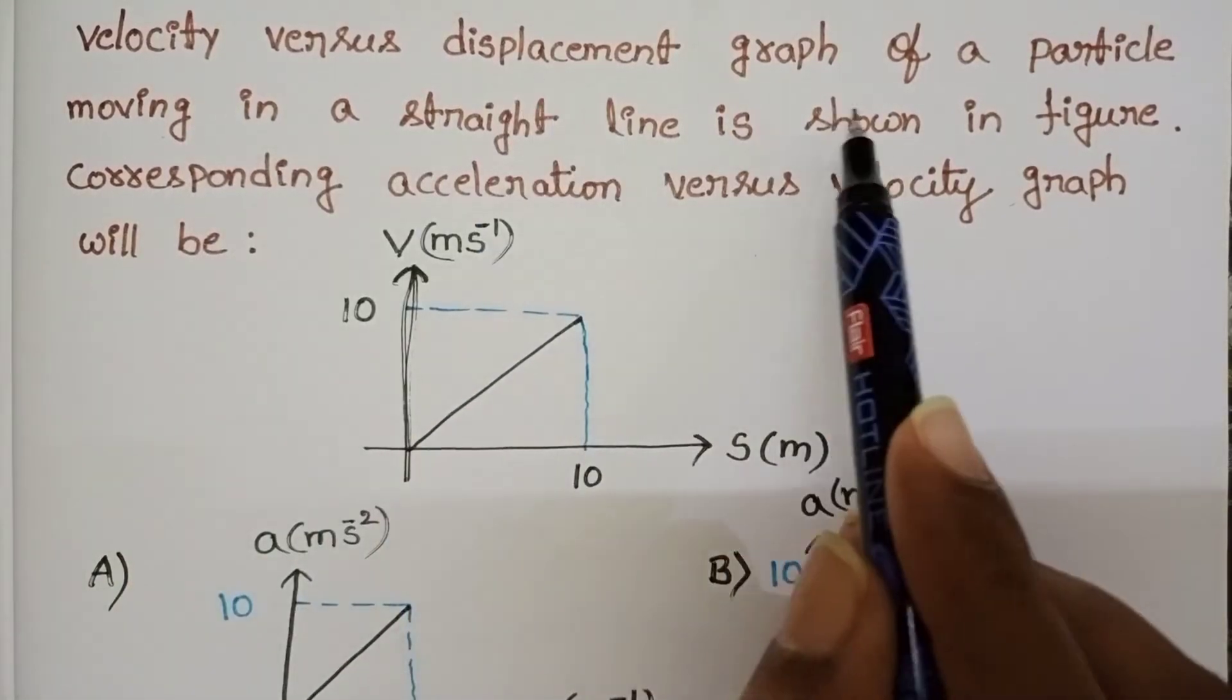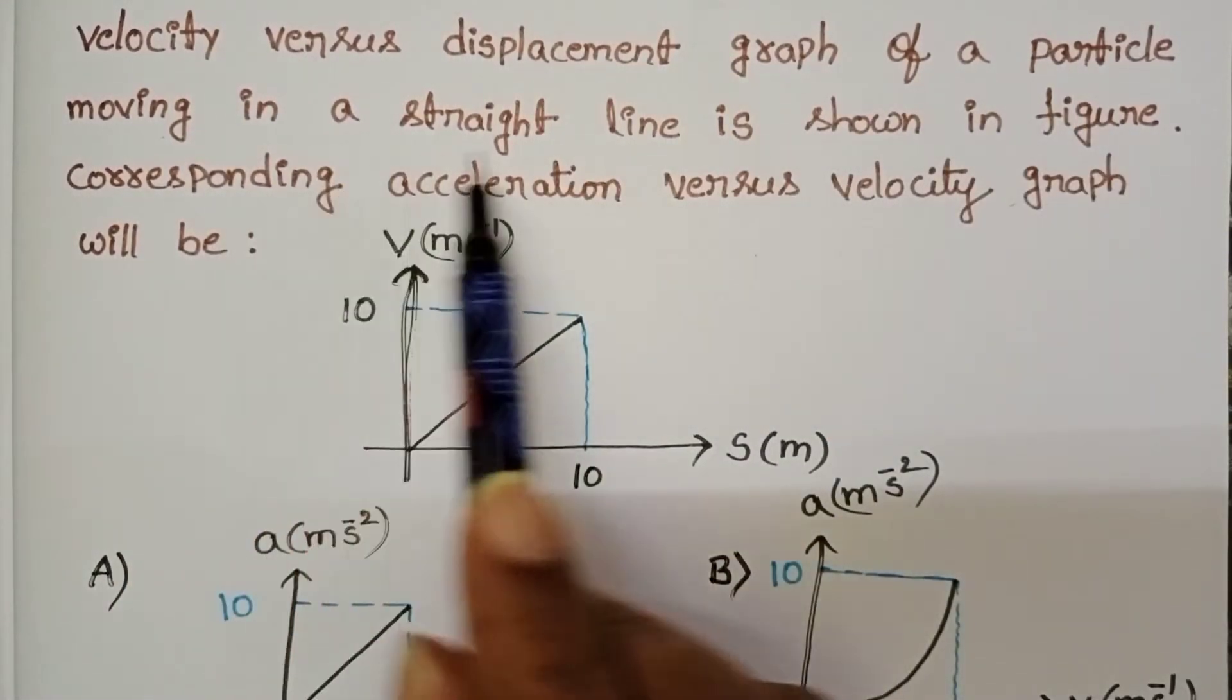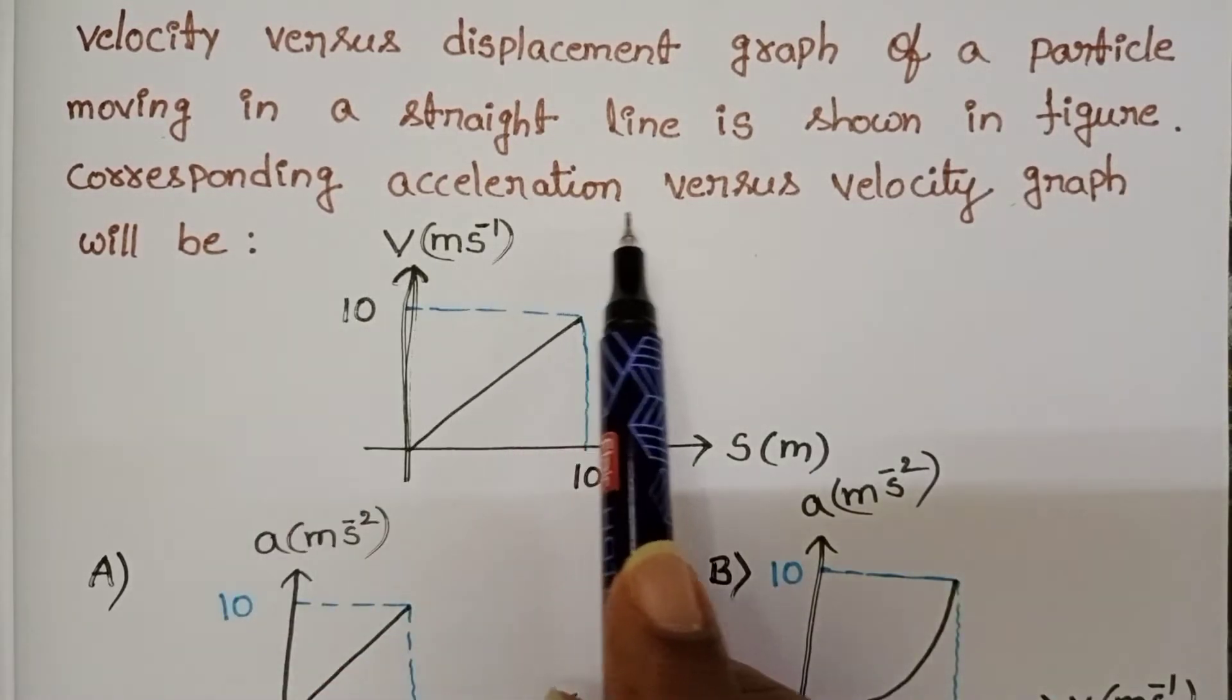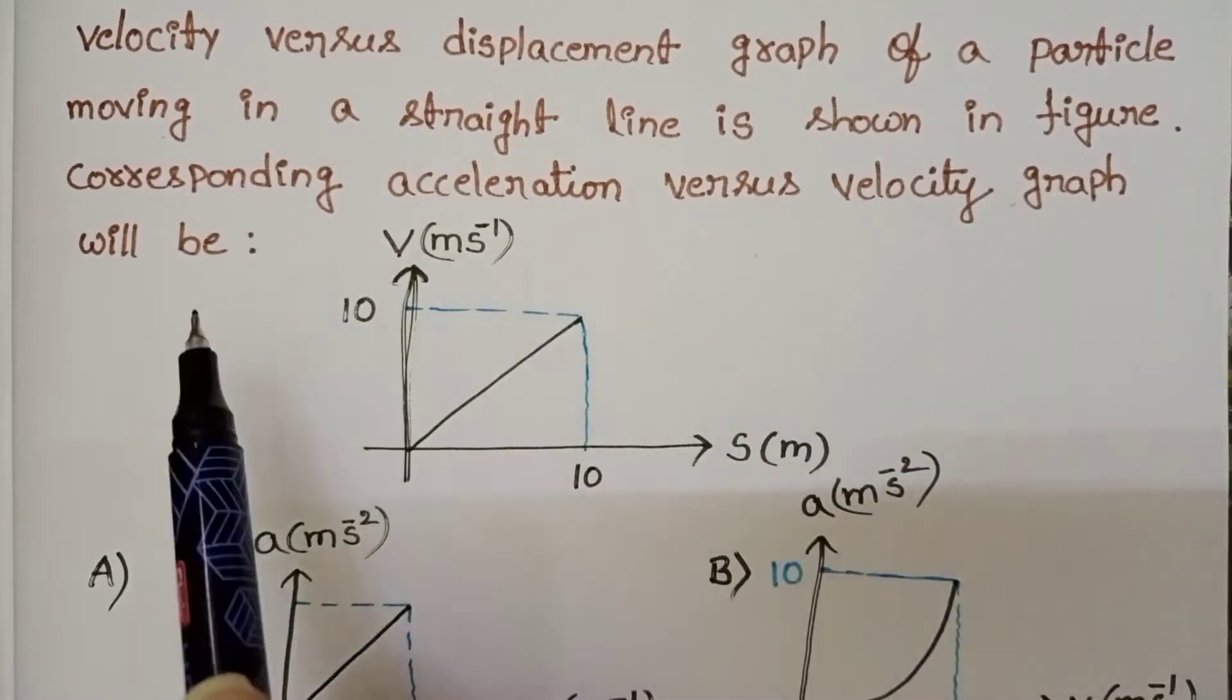Velocity versus displacement graph of a particle moving in a straight line is shown in figure. Corresponding acceleration versus velocity graph will be.